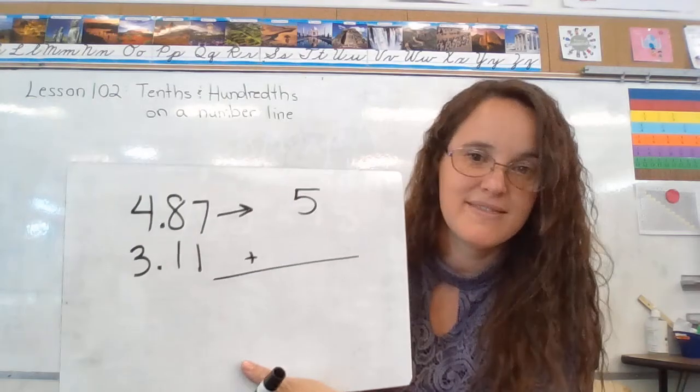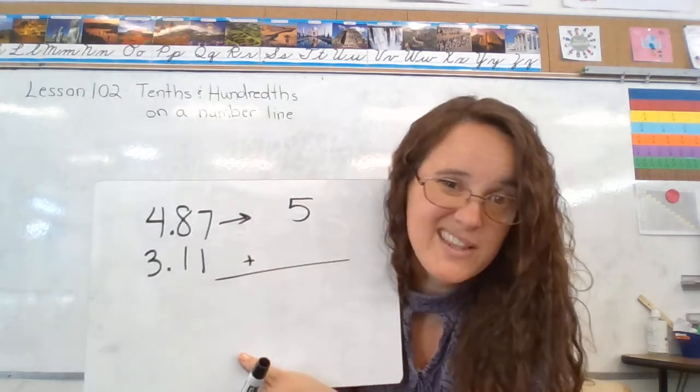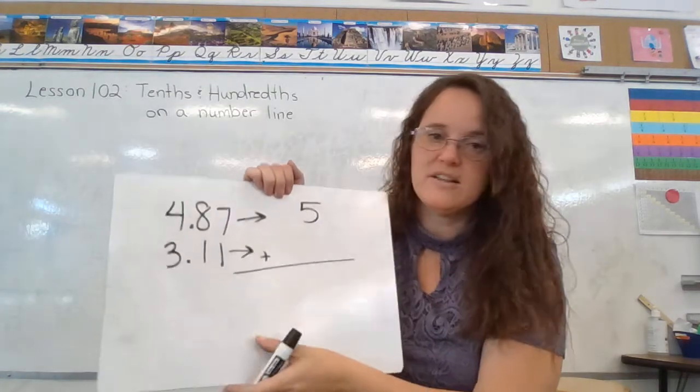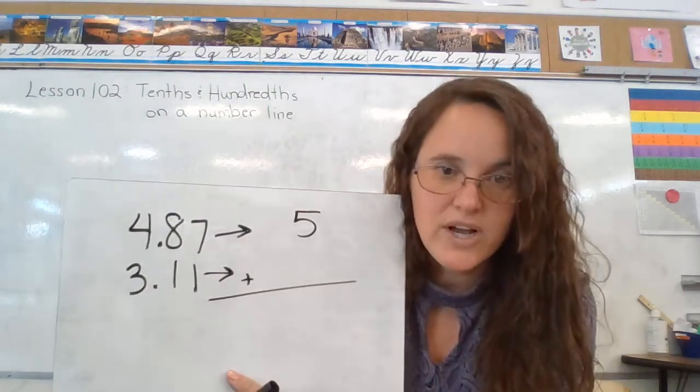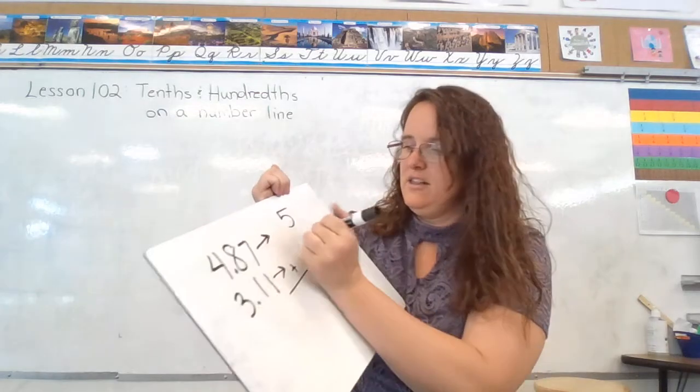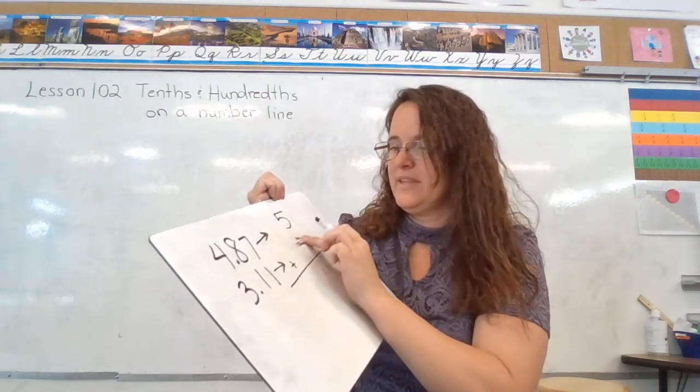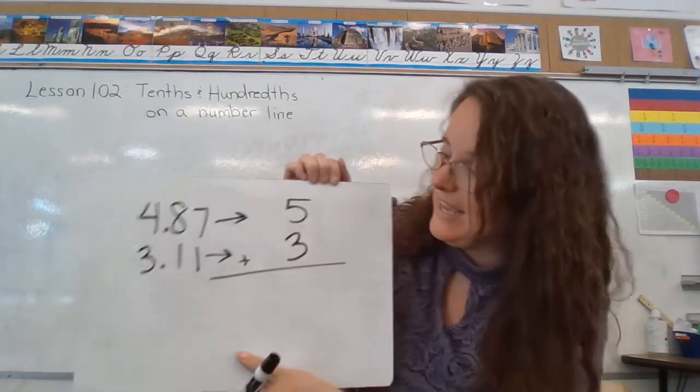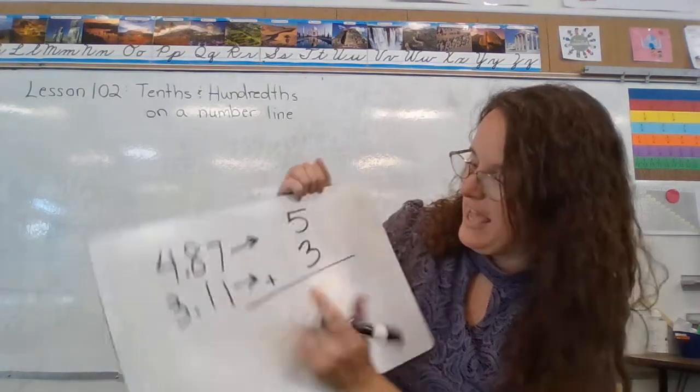We can do the same thing with 3 and 11 hundredths. We can look at it as money. Is it closer to 3 dollars or closer to 4 dollars? It's closer to, oh, I was going to say 3 and write 4. It's closer to 3, and then we add.